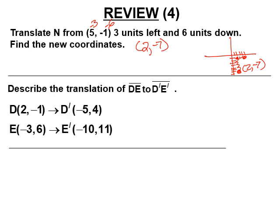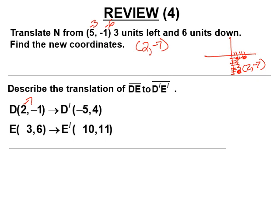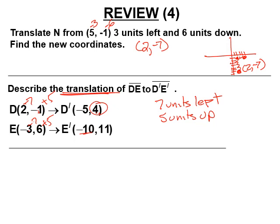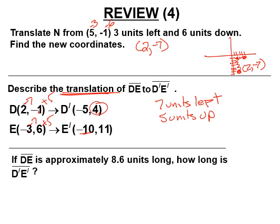Describe the translation that occurred from line segment DE to D prime E prime. Going from D to D prime, we subtracted seven from the x-coordinate — seven units left. From negative one to positive four, we added five — five units up. That's why we know it was a translation and not a reflection. If DE is approximately 8.6 units long, D prime E prime must also be 8.6 because translations are congruent.